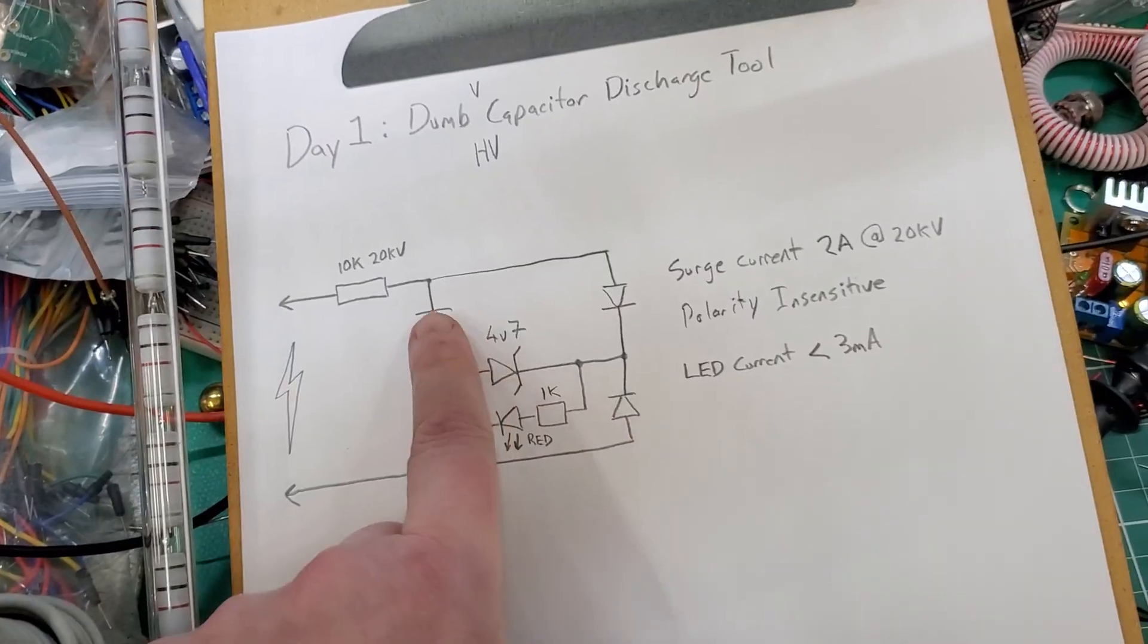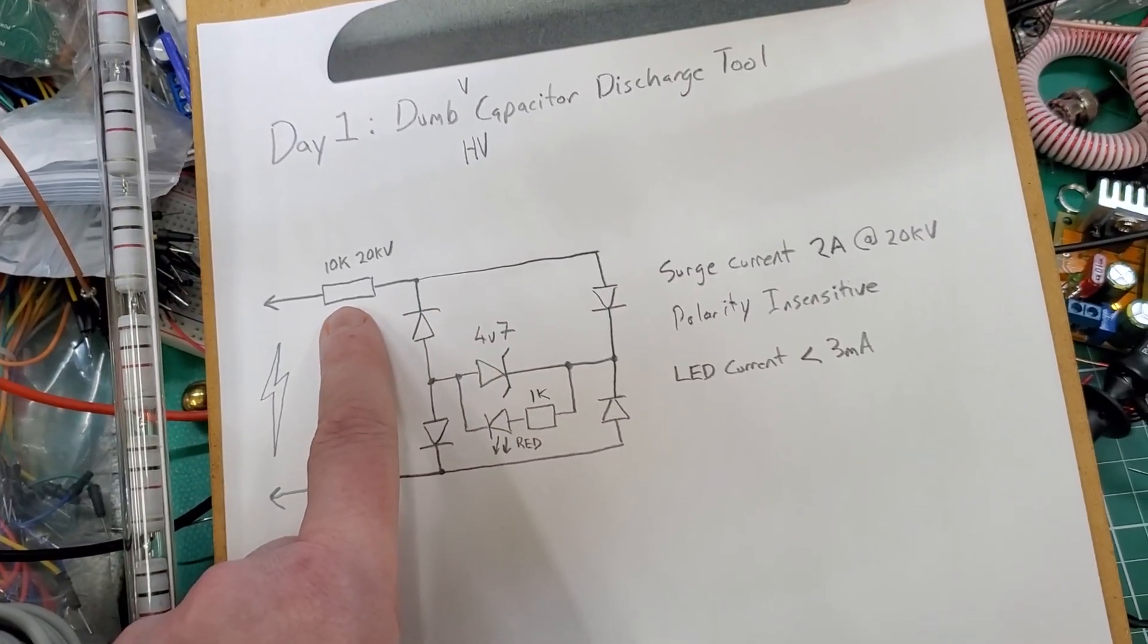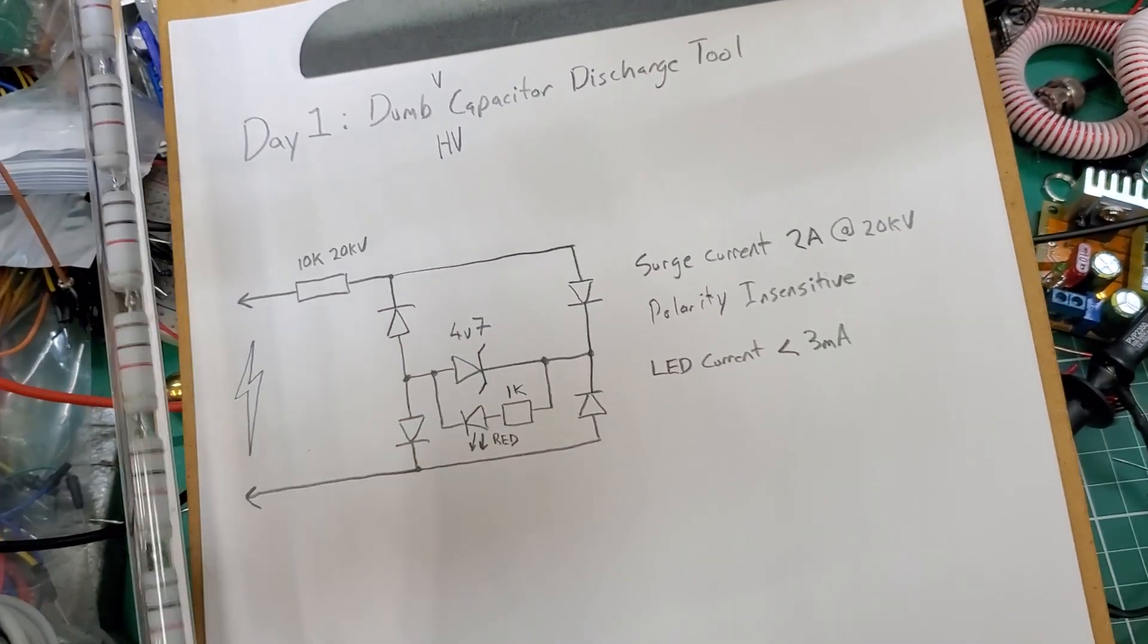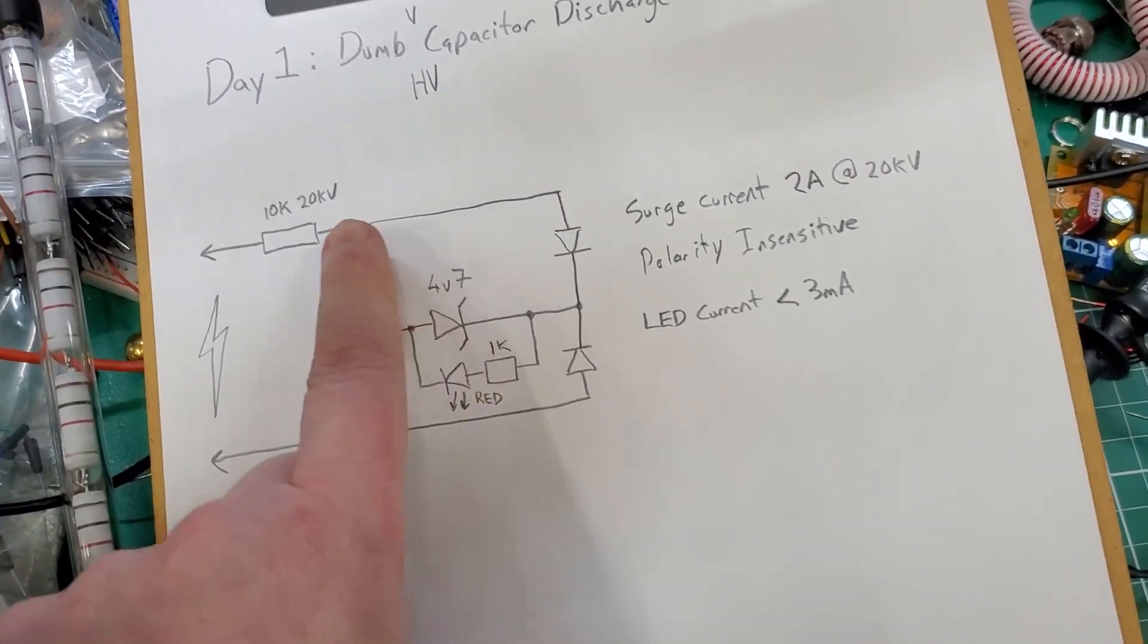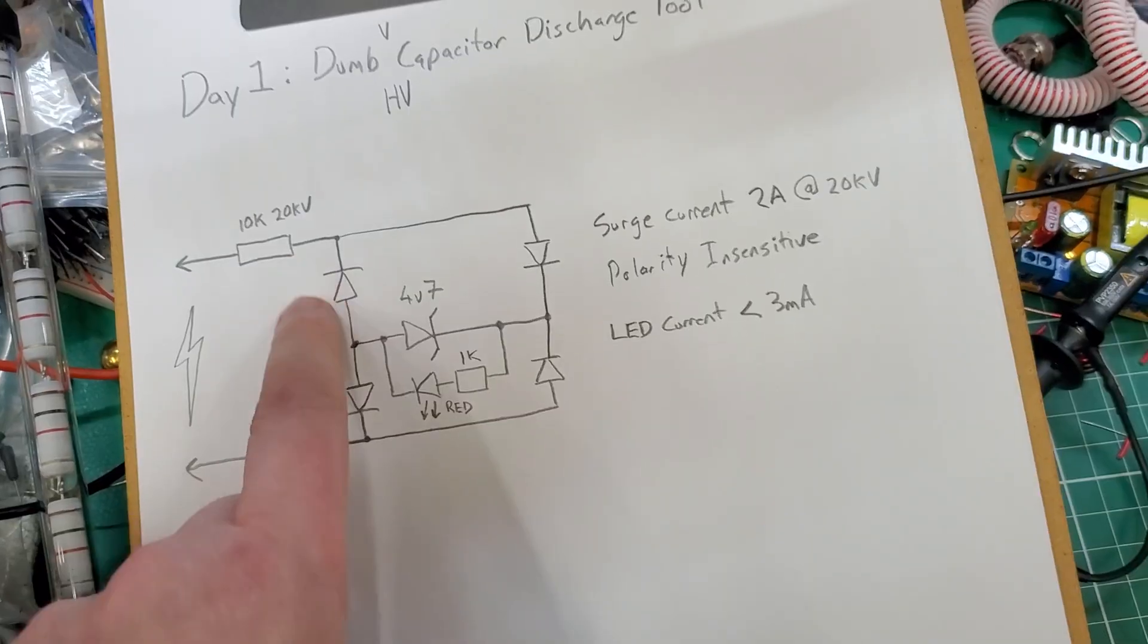It's extremely simple. We can see here it's just a resistor that's suitably rated. I made it out of a bunch of different resistors. I'll show you the full device here in a minute. And that drops the majority of the voltage.